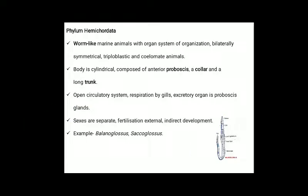Phylum Hemichordata: worm-like marine animals with organ system level of organization. They are bilaterally symmetrical, triploblastic and coelomate. Body is cylindrical, composed of anterior proboscis, collar and trunk. They have open circulatory system. Respiration is by gills. Excretory organ is the proboscis gland. Sexes are separate. Fertilization is external with indirect development. Example: Balanoglossus.